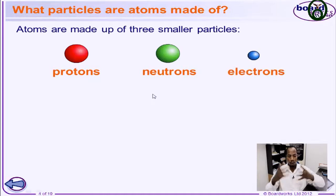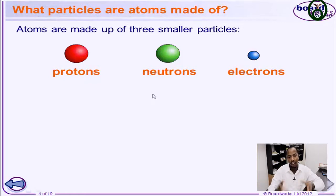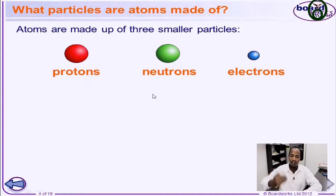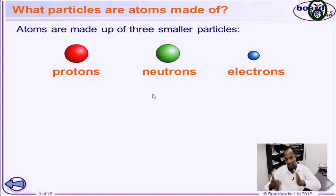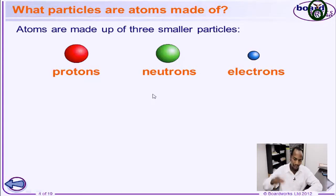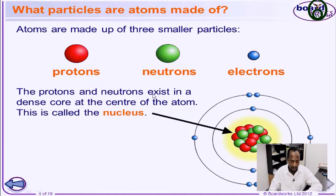We found that an atom can be divided into three subatomic particles. Even today, we found all the smaller particles apart from the protons, the neutrons, and the electrons — like the quarks and other subatomic particles that have been discovered today. And more will still be discovered in the future.